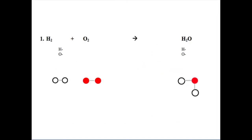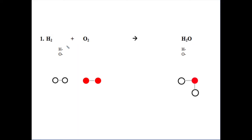Let's try an example: mixing hydrogen and oxygen to make water. H2 plus O2 yields H2O. The reactants are on the left and we have two of them, and the products are on the right — we only have one. On the reactant side, we have two hydrogens and two oxygens. On the product side, we have two hydrogens and only one oxygen. What happened to the other oxygen? This is not following the law of conservation of mass.